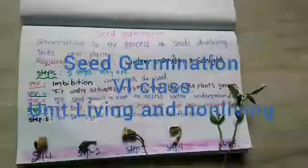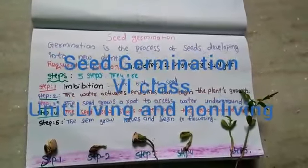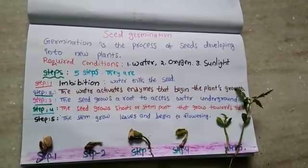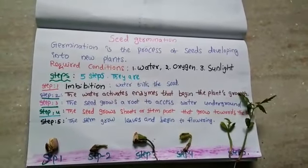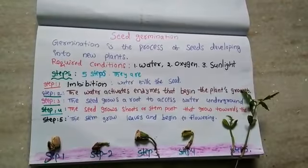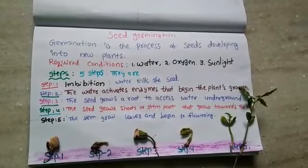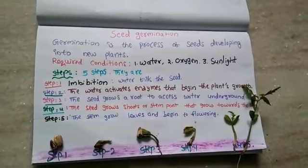Good morning children. See, this environment is very greenery. In this season, almost the earth is covered with green plants. In rainy season, we generally observe seeds germinating under trees, or wherever we put seeds for vegetables or greenery leaves, whatever may be.